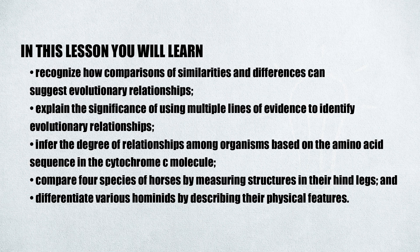In this lesson, you will learn to recognize how comparisons of similarities and differences can suggest evolutionary relationships; explain the significance of using multiple lines of evidence to identify evolutionary relationships; infer the degree of relationships among organisms based on the amino acid sequence in the cytochrome C molecule; compare four species of horses by measuring structures in their hind legs; and differentiate various hominids by describing their physical features.